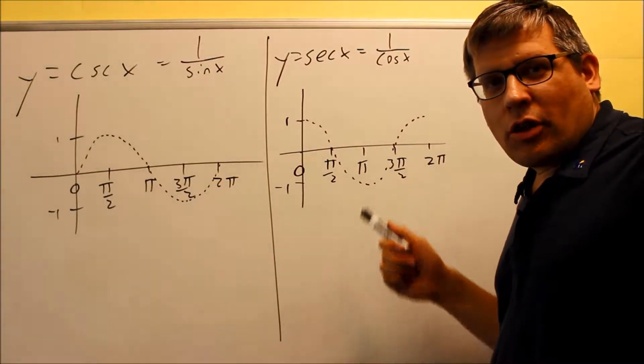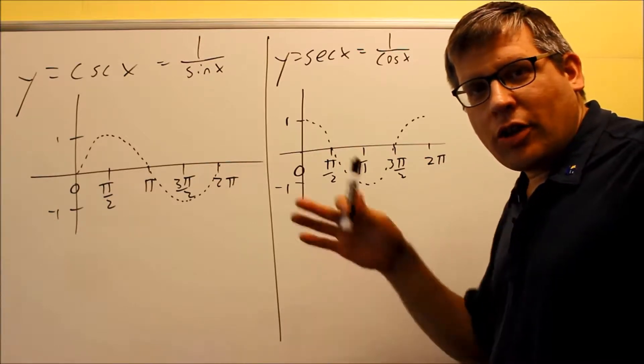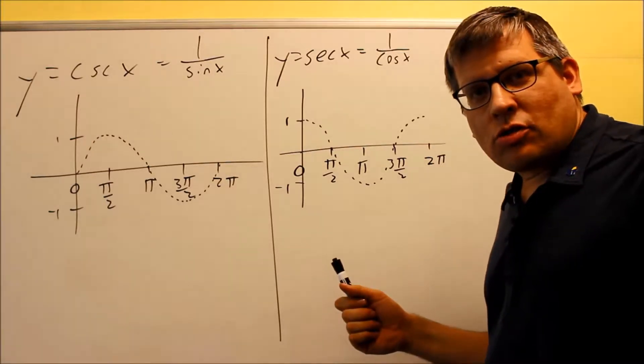Okay, in a previous section we already talked about the graphs of sine and cosine, so in this section we're going to talk about the other four trig functions, particularly secant, cosecant, tangent, and cotangent graphs.